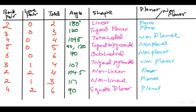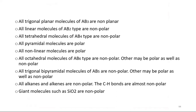This is a small summary about molecular shapes. Basically, all trigonal planar molecules of AB3 type are non-polar. AB2 type like CO2 — non-polar. AB4 type like SF4. AB6 like SF6. AB5 like PF5.